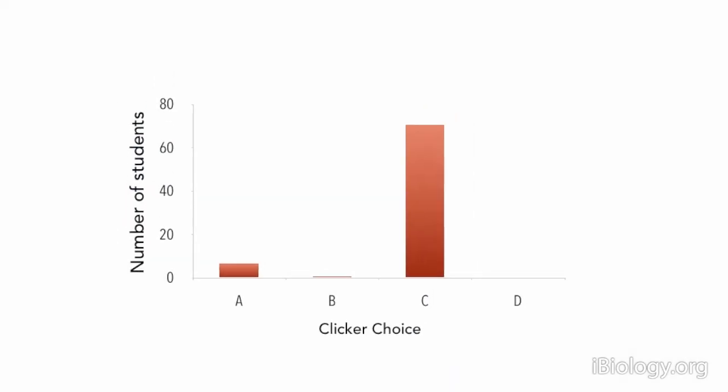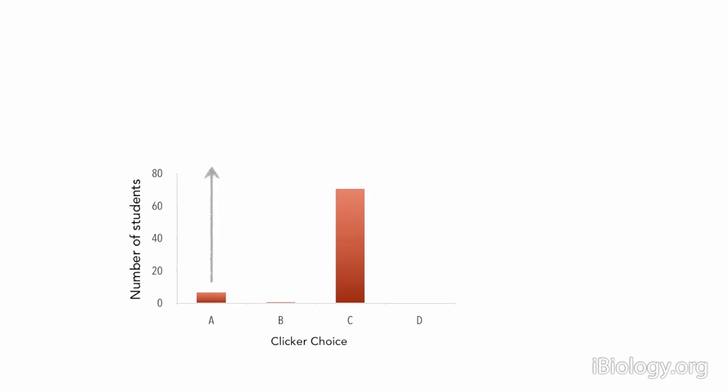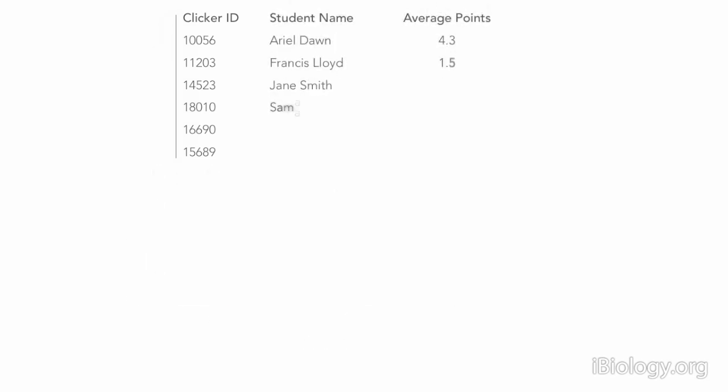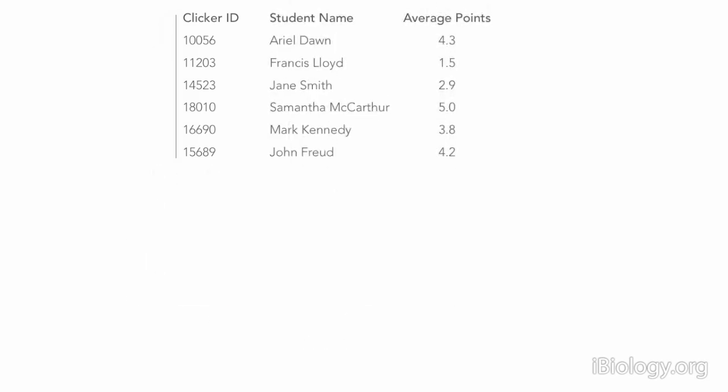Second, the data are all recorded in the computer, so if one wants to go back and look at how people did on a question, what kind of distribution of answers there were, or do education research on the results, it's easy to do. The clickers are registered, so the instructor has the clicker number and can follow an individual student's responses using their clicker information.